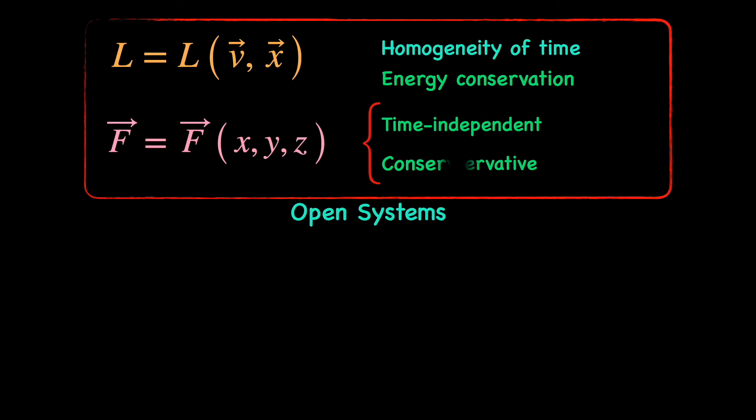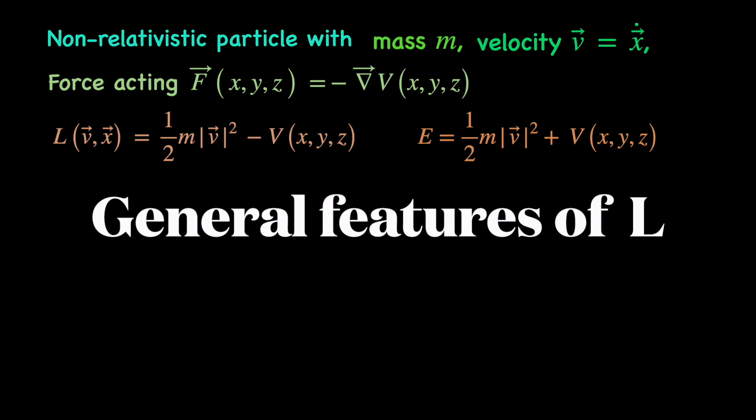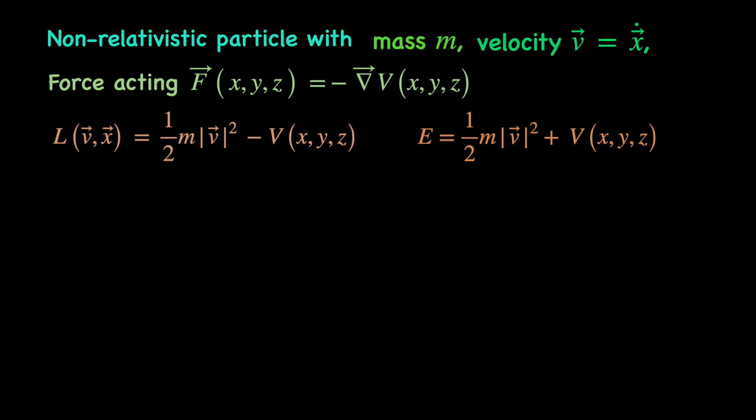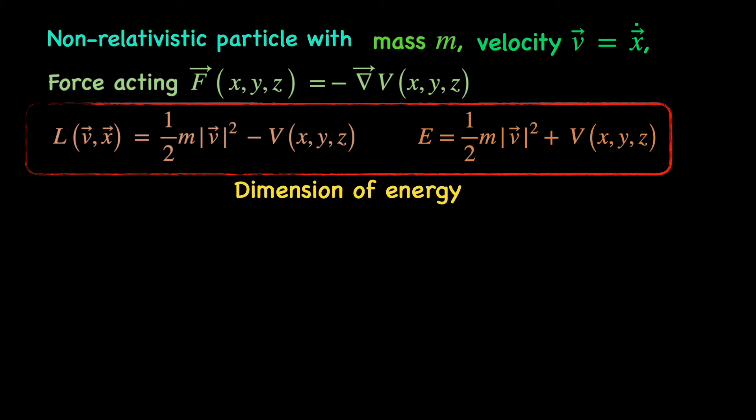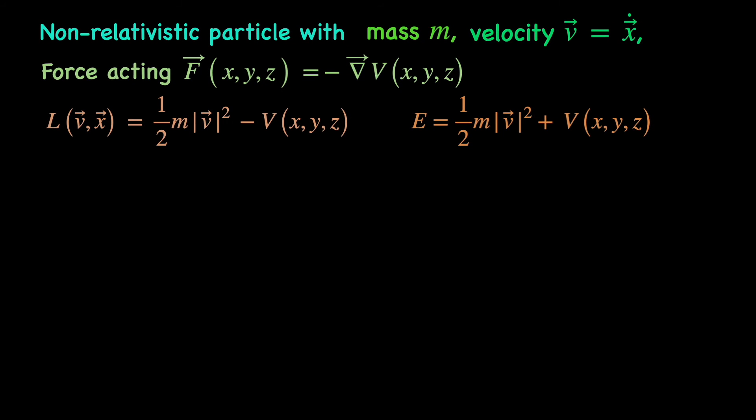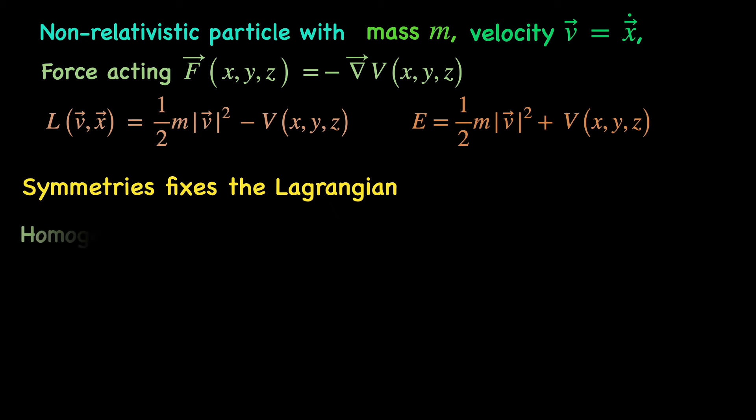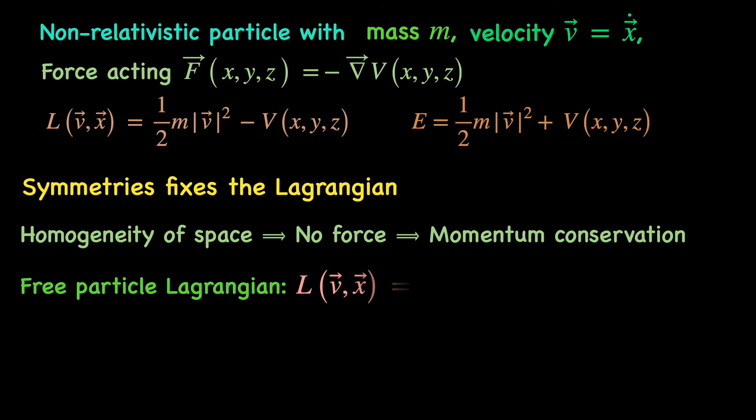Today, we have looked at what we call a closed system, a non-relativistic particle of mass m and velocity v equals x dot vector being acted upon by a conservative force which is determined by the negative gradient of its potential energy. Its Lagrangian turns out to be the difference between its kinetic and potential energy, whereas its conserved energy is the sum total. This tells us certain things about the Lagrangian of any system in general: that it has to have the dimension of energy, it should only depend on the position and velocity variables if the system is a closed one, and most importantly the symmetries that the system has go a long way in fixing the form of the Lagrangian. We have already talked about the homogeneity of space which means no conservative force. So, the momentum is conserved and it's a free particle Lagrangian given by the kinetic energy term only.